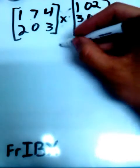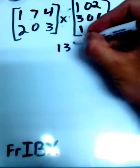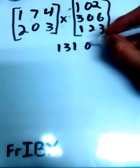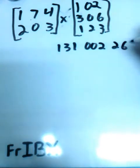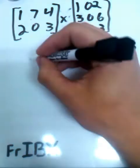1, 3, 1, 0, 0, 2, and 2, 6, 3. Second, drop down the other matrix.